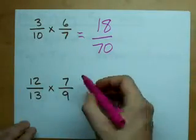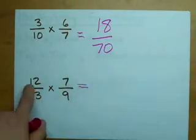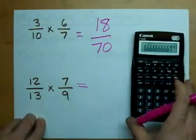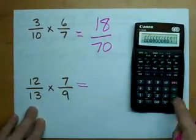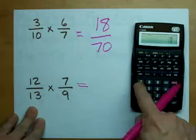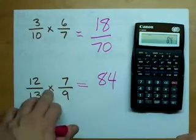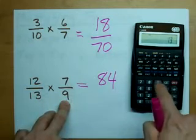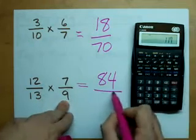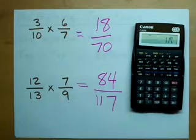How about this one? This one's tougher. Now, I know what these numbers are, but I'm going to pretend that I don't. 12 times 7 is 84. 13 times 9 is 117. True story.